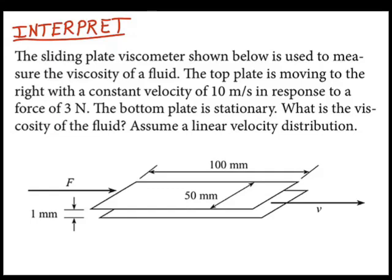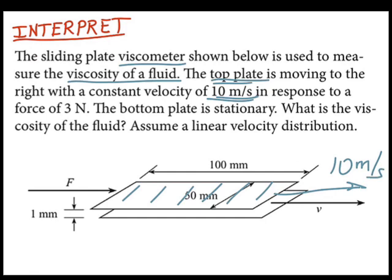I interpret the problem statement. I'm dealing with a viscometer, an instrument for measuring viscosity. The sliding plate viscometer is used to measure the viscosity of a fluid. The top plate is moving at 10 meters per second. This top plate is moving at 10 meters per second, and there's a force on this top plate of 3 newtons to overcome the viscous drag. The bottom plate is stationary. The goal is the viscosity of the fluid, and we're told to assume a linear velocity distribution in this gap between the plates.